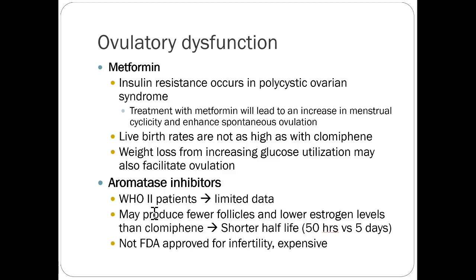Metformin, our drug for diabetes, actually has some data behind it with fertility. Insulin resistance occurs in polycystic ovarian syndrome, and treatment with metformin can cause an increase in menstrual regularity and enhance spontaneous ovulation. Live birth rates are not as high as with Clomiphene, but weight loss from increasing glucose utilization may also facilitate ovulation. Metformin has specifically been studied in people with PCOS and has been shown to increase fertility.